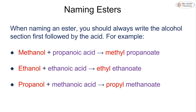For naming examples: methanol + propanoic acid gives methyl propanoate; ethanol + ethanoic acid gives ethyl ethanoate; propanol + methanoic acid gives propyl methanoate.